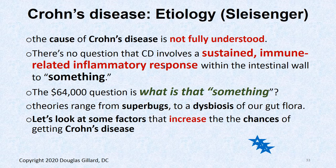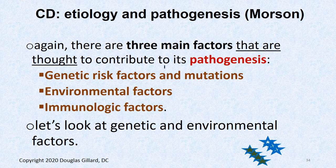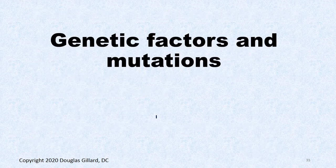The etiology of Crohn's disease is not fully understood. There's a wicked inflammation, but the question is why. There are three main categories of risk factor: genetic (gene mutations), environmental, and immunologic. We'll focus mainly on genetic and environmental factors.